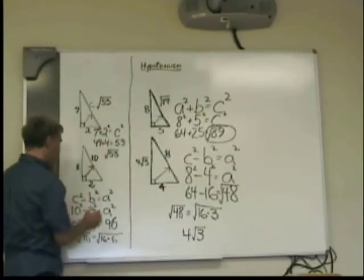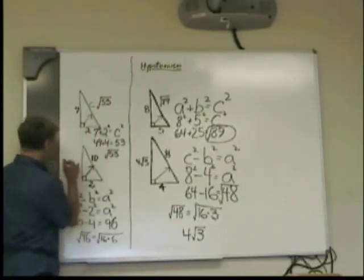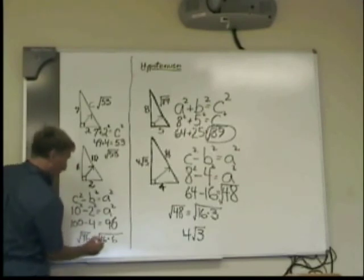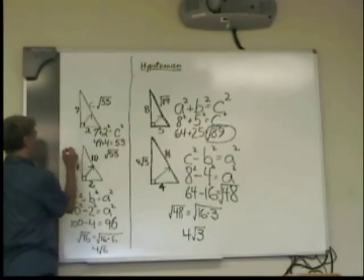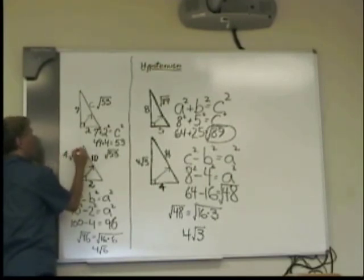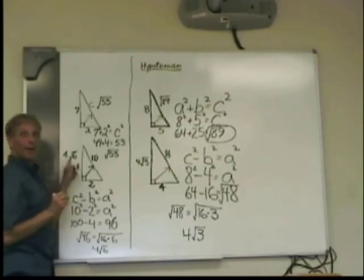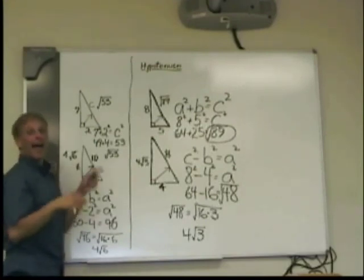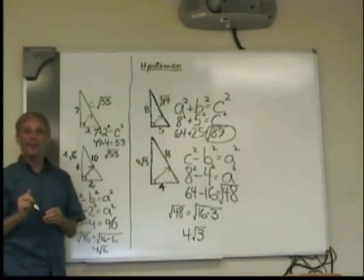And the second one, which is the side, would be 4 radical 6. Because the 16 comes out of the radical as 4 and the radical 6 stays in. That could be simplified. And that's how you do hypotenuse.